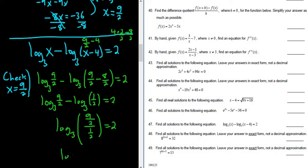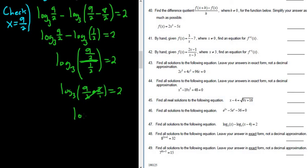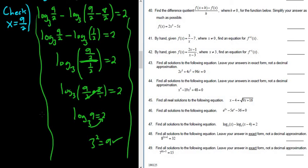So we have log base 3 of 9 over 2 divided by 1 over 2. That's 9 over 2 times the reciprocal, 2 over 1. The 2's cancel — this is beautiful — and we get log base 3 of 9 equals 2. That checks, because 3 squared equals 9. Checking was harder than solving the problem! I hope this video has been helpful.